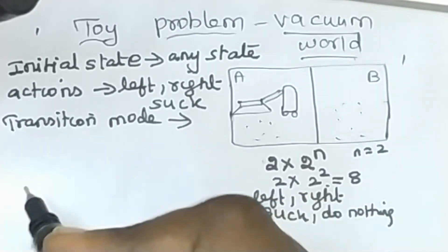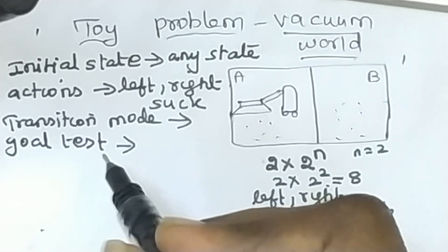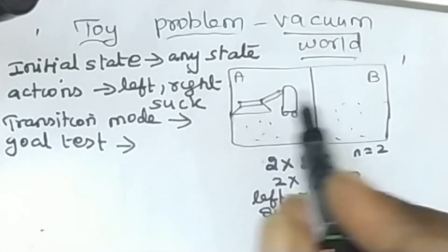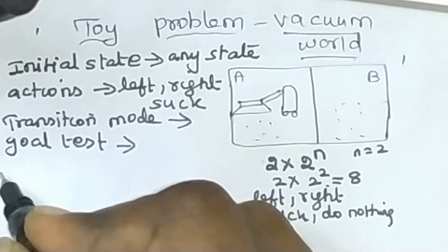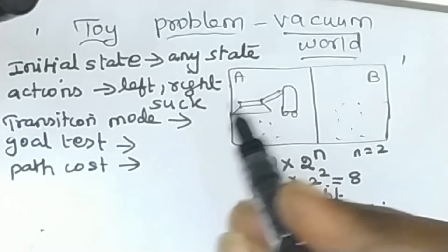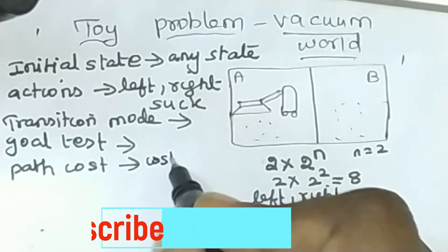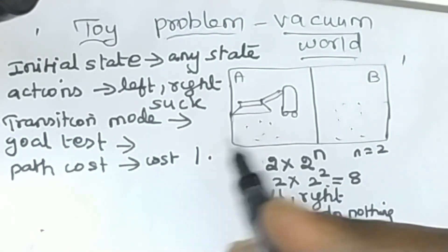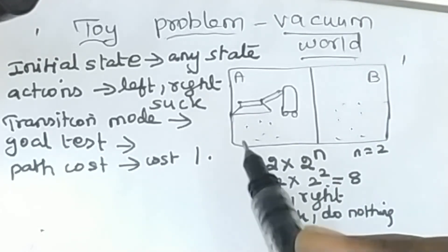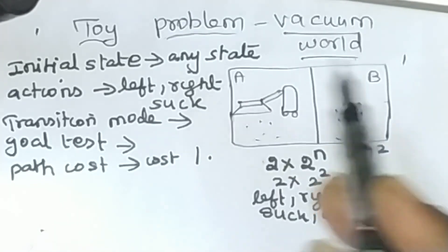The next component is the goal test, which checks whether both squares are clean. The last component is path cost. The number of steps used to clean both squares is counted, and that is the path cost. This completes the problem formulation for the vacuum world problem.